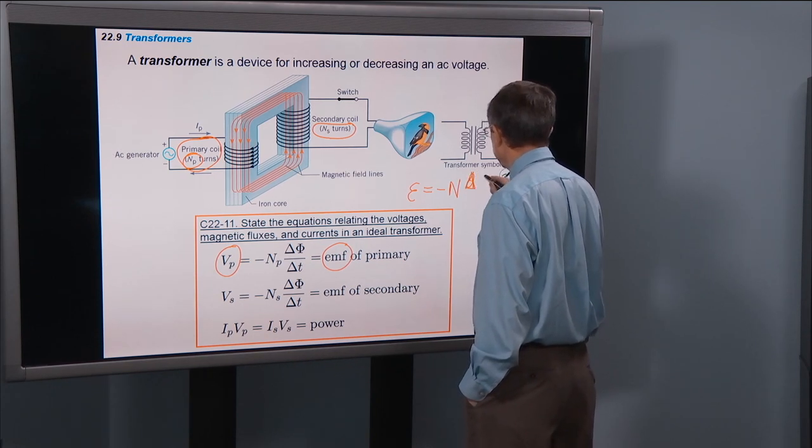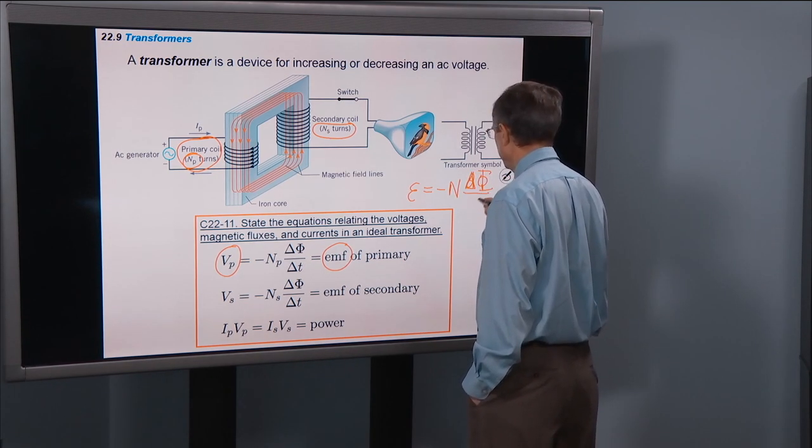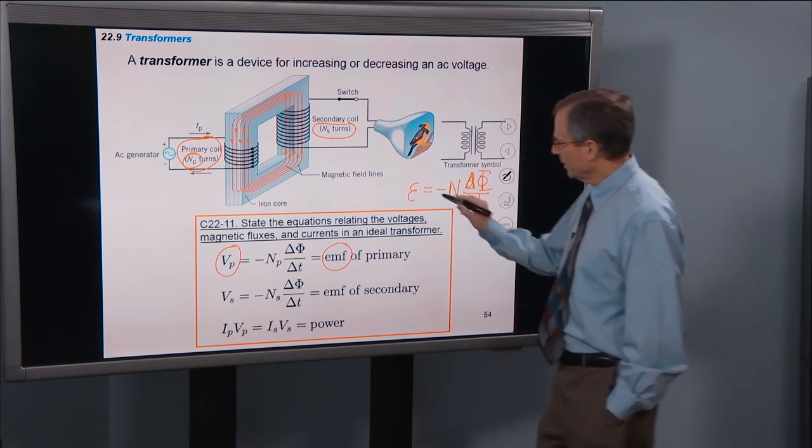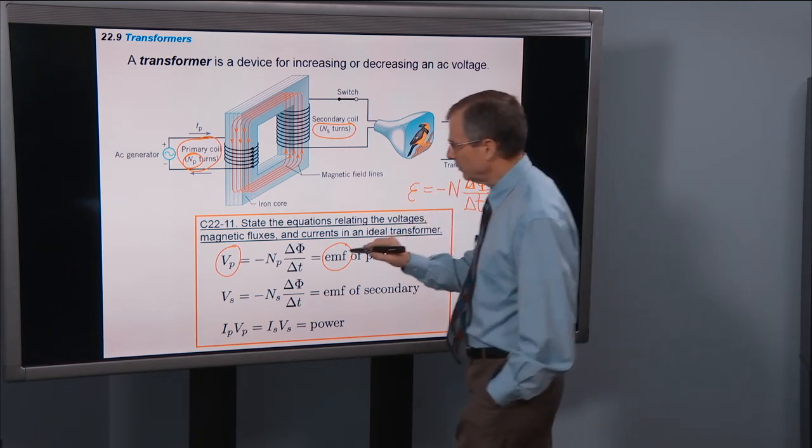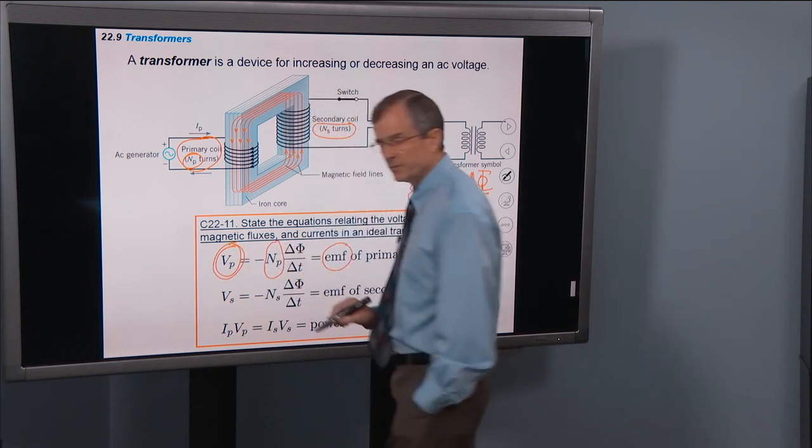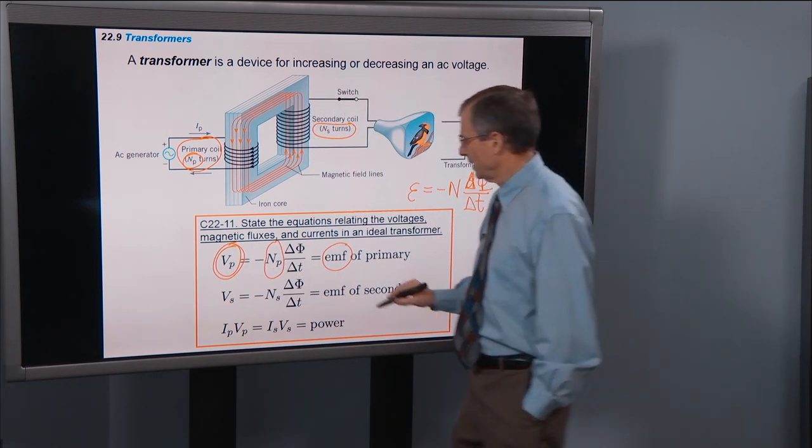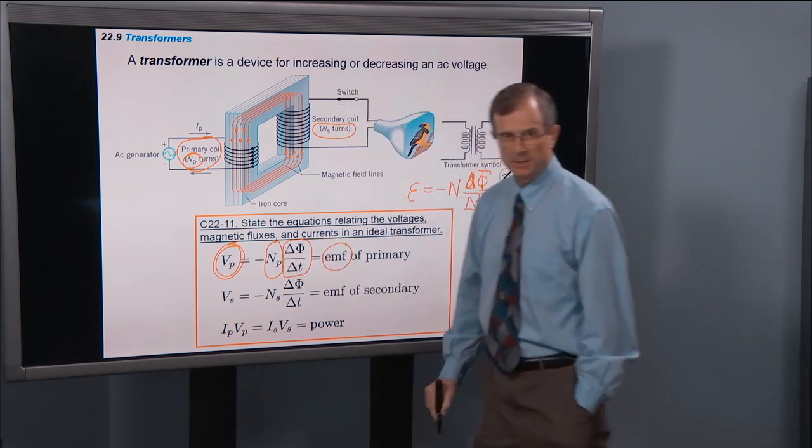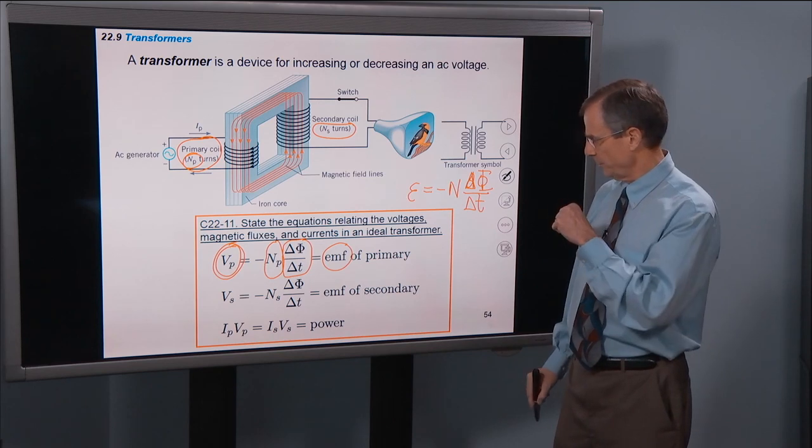And we're going to replace that script E with a Vp. Here's Np, the number of turns in the primary. And then here's the change, the rate of change of flux with time through the primary.